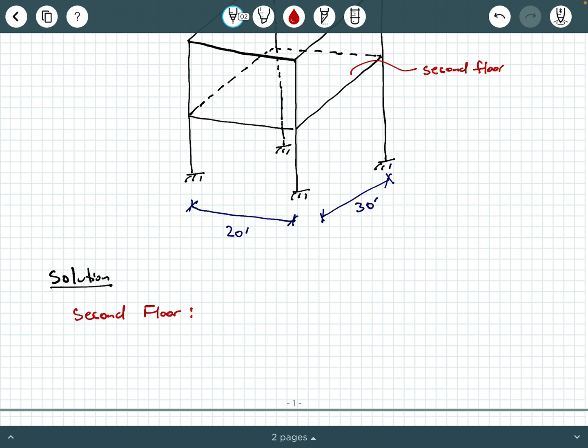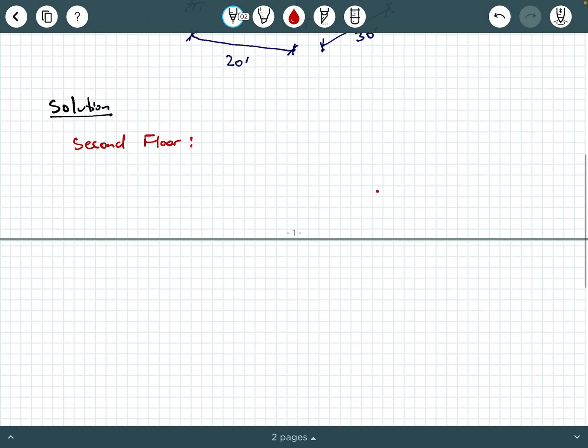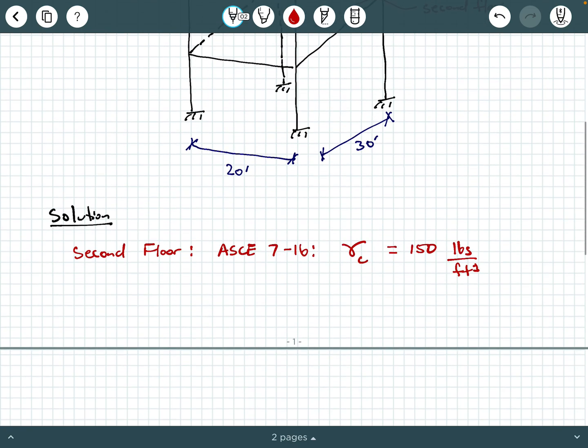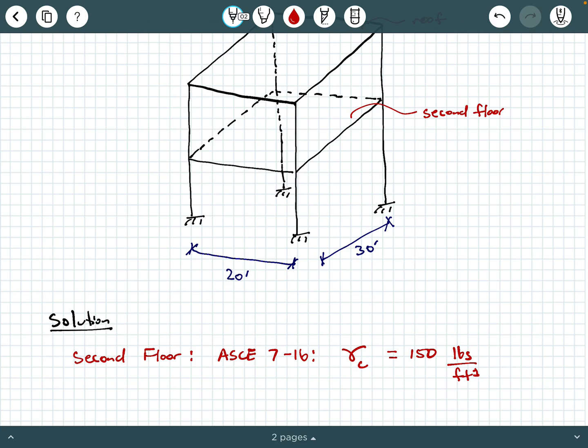And we are told that that second floor is made out of reinforced stone concrete. So from ASCE 7-16, the unit weight of that concrete, we'll call that gamma sub C for concrete, is 150 pounds per cubic foot, which we call PCF sometimes. So the first thing we can do is, that's a unit weight, that's a density, right? If we multiply this unit weight by the thickness that we're given, that will convert that to a surface load.